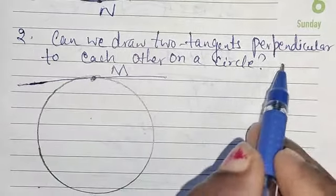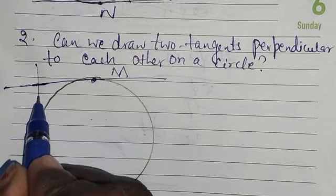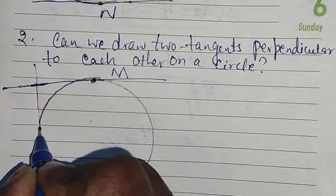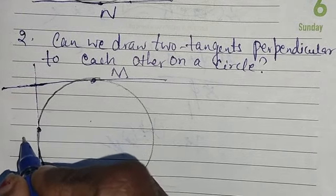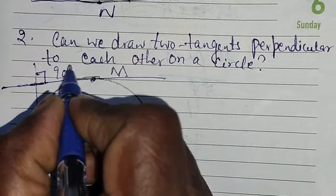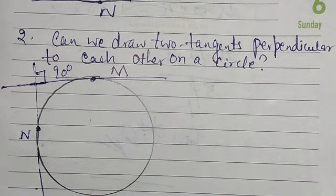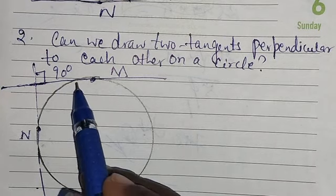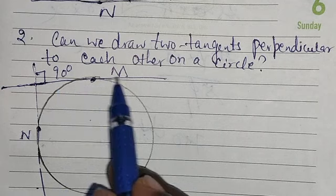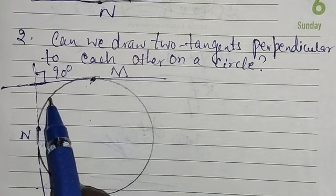Can we draw two tangents perpendicular to each other on a circle? If a line touches the external circumference of a circle at only one point, it is called a tangent to the circle.